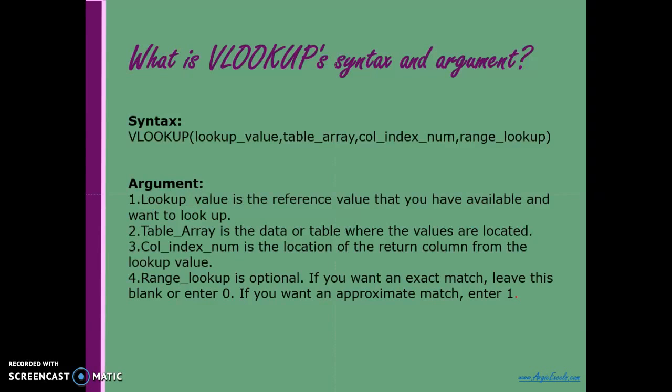The key is to understand what each argument tells you or asks you to do. Lookup value is the reference value you have available and want to look up. Table array is the data or table where the values are located. Column index number is the location of the return column from the lookup value. Range lookup is optional — leave it blank or enter zero for an exact match, or enter one for an approximate match.